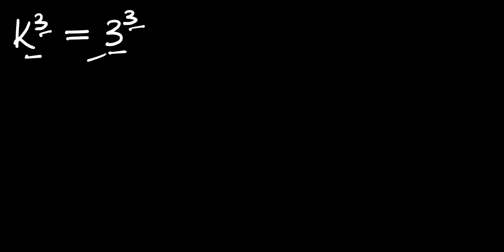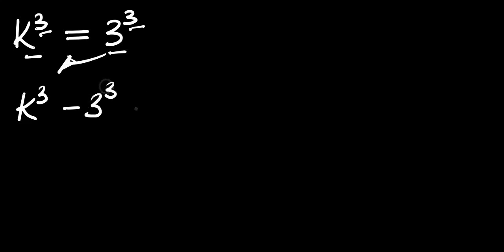The first thing we are going to do is move this over. We are going to have k raised to the power of 3 minus 3 raised to the power of 3, and this equals 0.